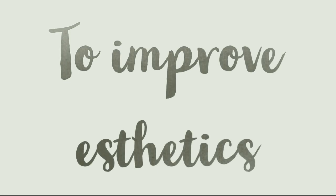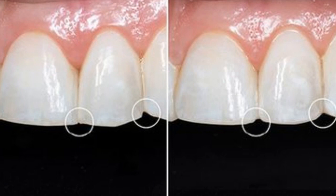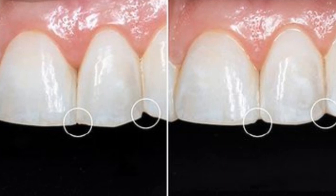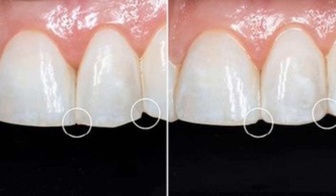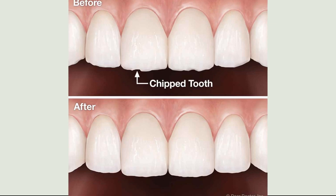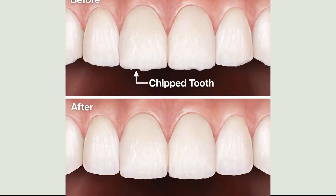Why do we need to do enameloplasty or odontoplasty? In order to improve aesthetics — that is the main concern. As you can see in the picture to the right, this is before, and the picture to the left is after the enameloplasty. We improved the appearance of the central incisor, making it straight. In this case we had a chipped tooth, and the enameloplasty was done to improve the aesthetics perfectly.